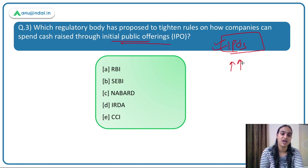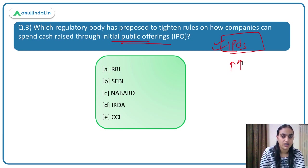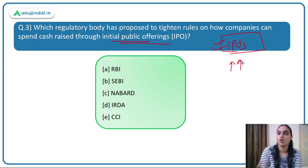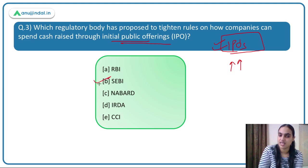SEBI is the regulatory body which has proposed certain rules related to spending cash raised through IPOs. These proposed rules are open for public comments till the end of November, after which the final regulations will be released. SEBI, as the watchdog for our securities market, has the power to introduce such rules.